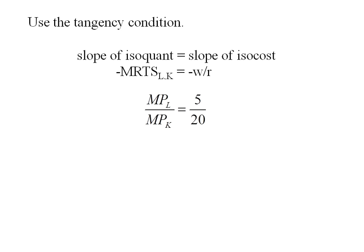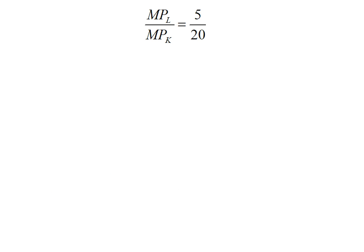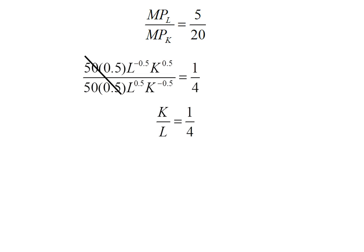The marginal product of labor divided by the marginal product of capital equals 5 over 20. Going back to my production function, I can find the marginal products and plug in. I can do a lot of simplifying here. The 50 and the 0.5 cancel out. Since this is a Cobb-Douglas, I know I'll end up with a K over L ratio, and the right-hand side simplifies to 1/4.